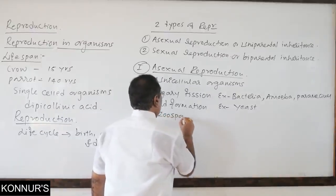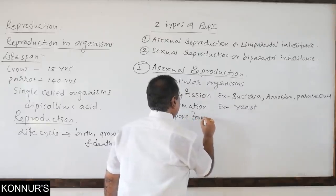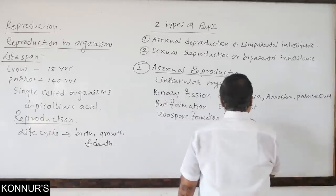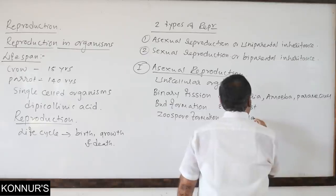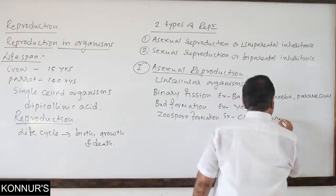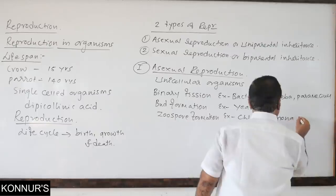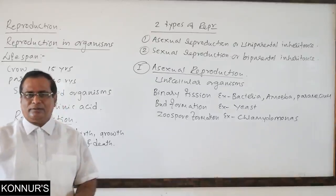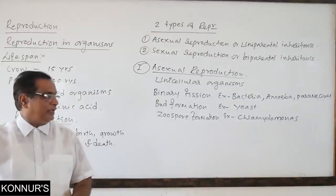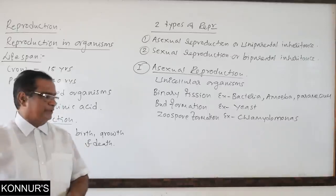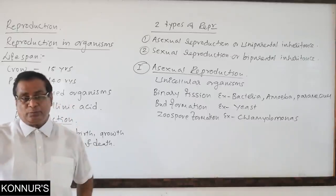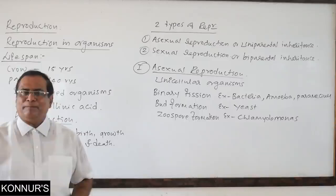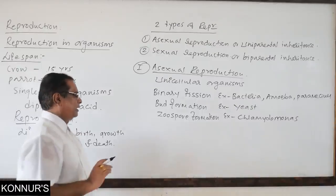Zoospore formation occurs in unicellular algae like Chlamydomonas. The inner content splits into many movable spores called zoospores, and they give rise to new Chlamydomonas. Here also only a single parent is involved.